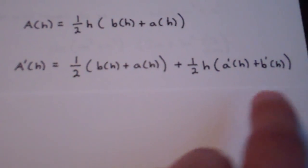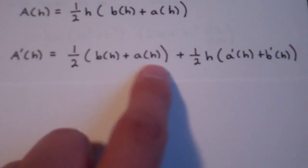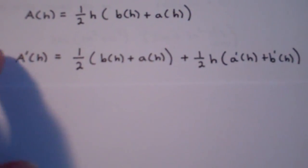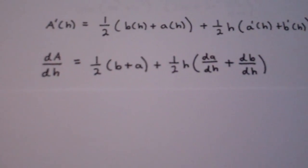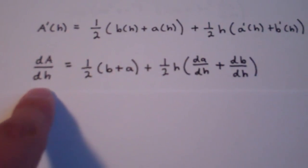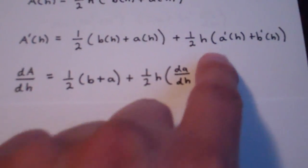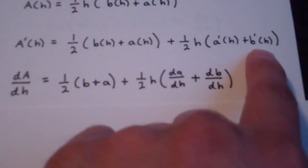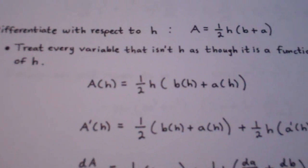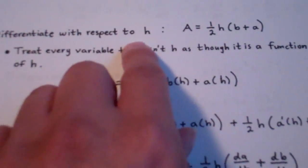At this point, after you take the derivative, we can eliminate the function notation. We can put b of h and a of h back to just b and a. And we change all of our derivatives into Leibniz notation. So a prime of h I just rewrite as dA/dH. The function notation basically goes away — we just go back to b and a. And b prime of h would be dB/dH. So if you want to differentiate with respect to a variable, you just treat every variable in the formula as though it is a function of that variable.